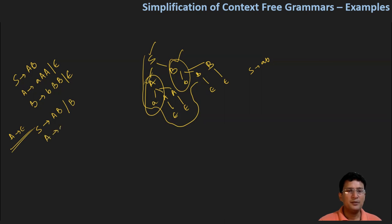Now A produces A, A, A. In this, if we place epsilon in place of the first capital A, you will remain with A and A. And if we place epsilon in place of both, you will remain with only A — not double A, but only A.